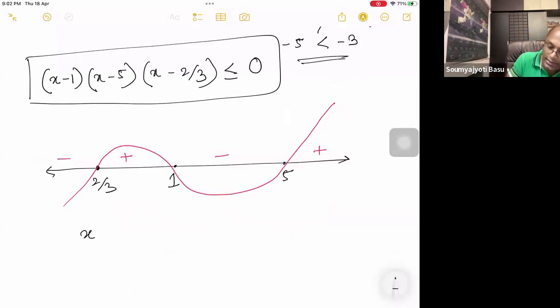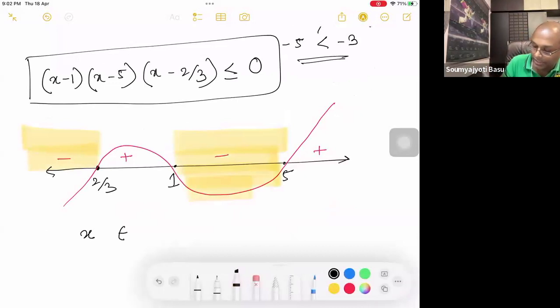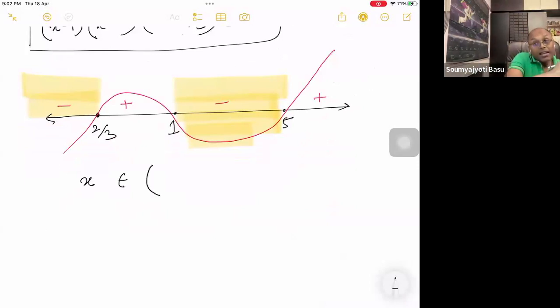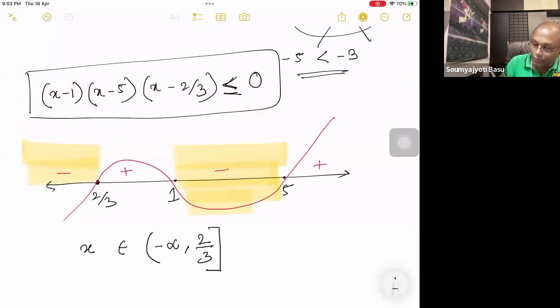So, here the solution would be x belongs to, which is the first zone. The first zone is this, and the next zone is this, which is within my requirement. So, it becomes x belongs to, from minus infinity, 2 to 2 by 3. Minus infinity is always open bracket, but 2 by 3 over here would be a closed bracket. Why? Because x can be equal to 2 by 3. It's a dot, or from here, it's a less than or equal to. What is the other zone? Union. One comma five, both closed brackets, because one and five, both of them are included. So, this is the solution.